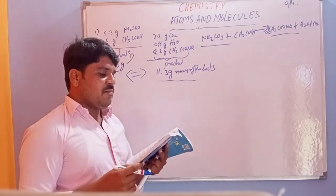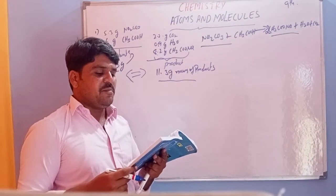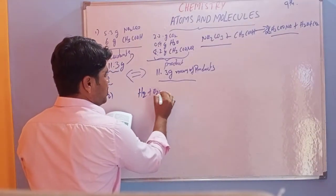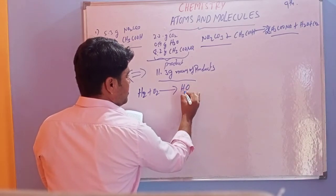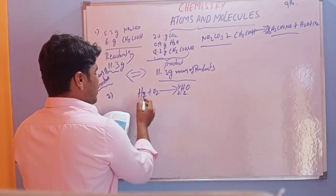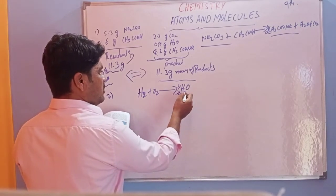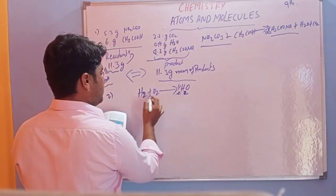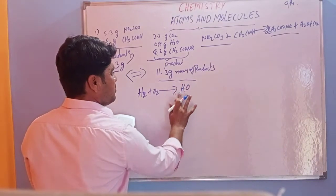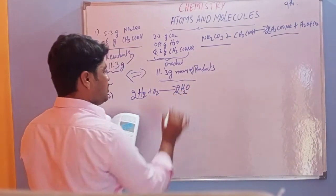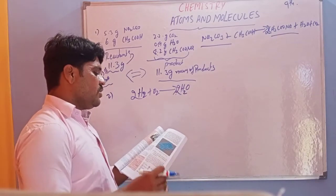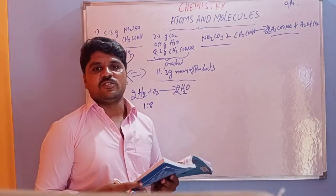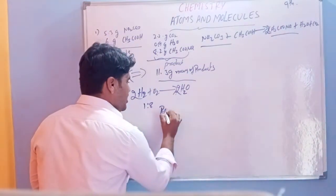Second question: hydrogen and oxygen combine in the ratio 1 to 8 by mass to form water. The formation reaction is 2H₂ + O₂ → 2H₂O. The mass ratio of hydrogen to oxygen is 1 to 8. So 1 gram of hydrogen combines with 8 grams of oxygen.